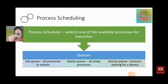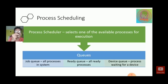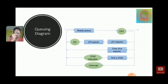Today our discussion is based on process scheduling. The process scheduler selects one of the available processes for execution, and for that the CPU requires three kinds of queues: job queue, ready queue, and device queue. Job queue contains all the processes in the system, ready queue contains all the ready processes, and device queue contains processes waiting for a required device.